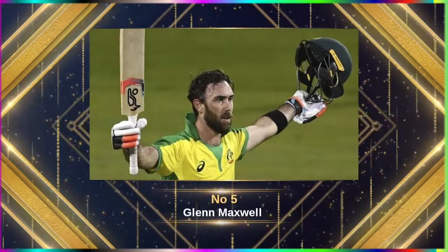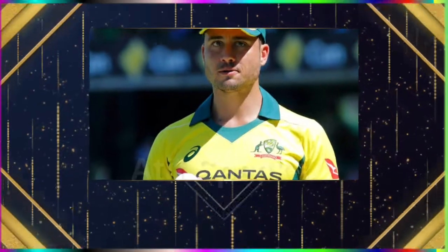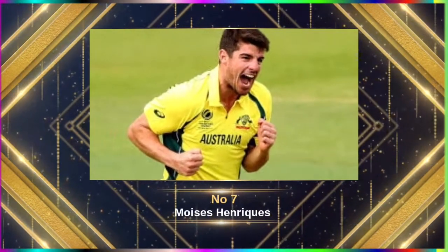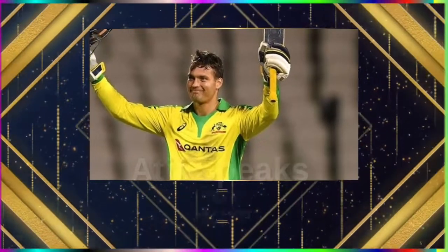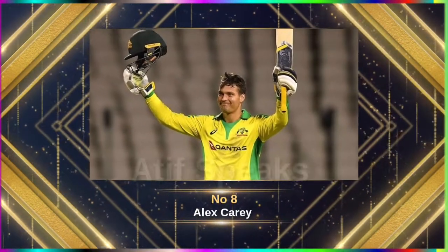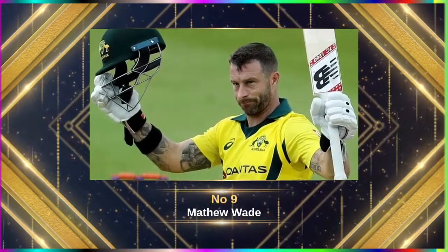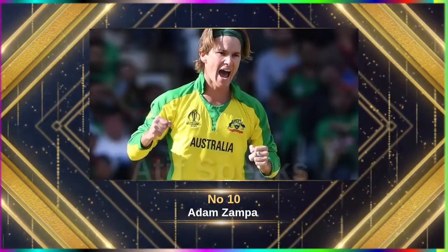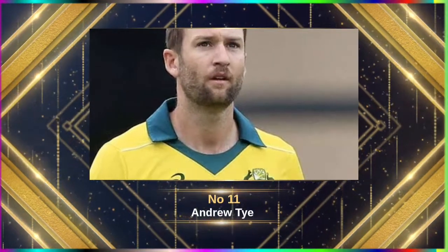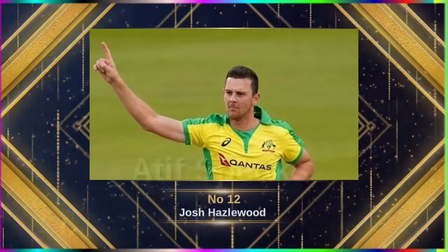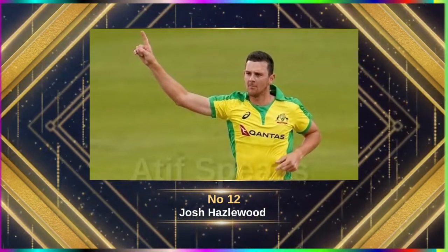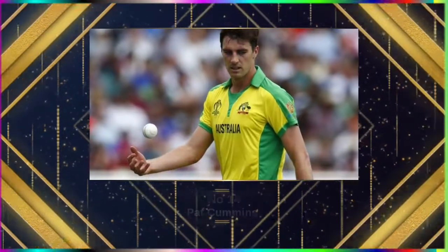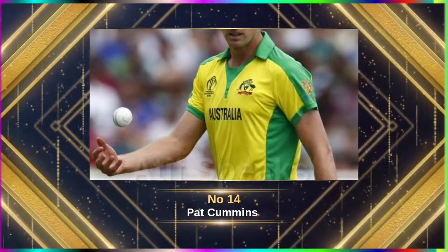No. 5 All-rounder Glenn Maxwell. No. 6 All-rounder Marcus Stoinis. No. 7 All-rounder Moises Henriques. No. 8 Wicketkeeper-Batsman Alex Carey. No. 9 Wicketkeeper-Batsman Matthew Wade. No. 10 Leg-spinner Adam Zampa. No. 11 Fast bowler Andrew Tye. No. 12 Josh Hazlewood. No. 13 Mitchell Starc. No. 14 Pat Cummins.